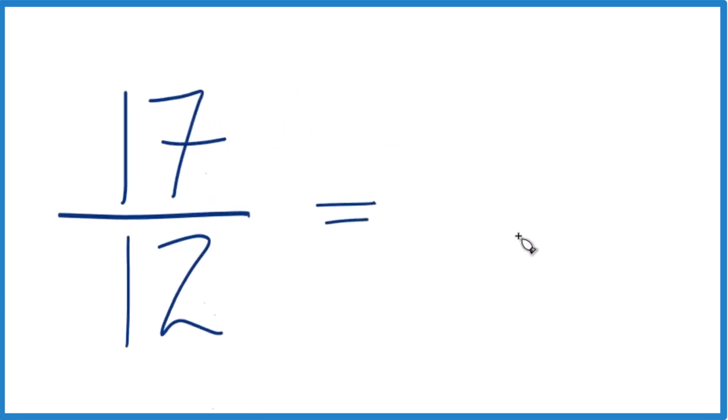12 goes into 17. 1 times 12 is 12, and then we'd have 5 left over, and then we just bring this 12 across here.